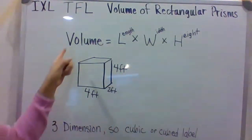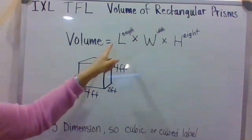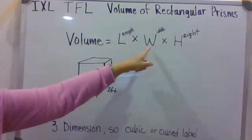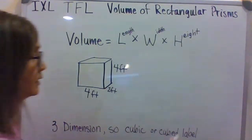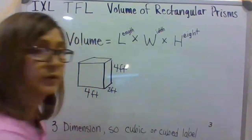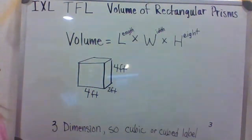So, again, the formula to find volume is length times the width times the height. How many dimensions are we working with? Those three dimensions, right? So, we need to have it with an answer being cubic or cubed or a little 3 to show that it's cubed using those three dimensions, length, width, and height.